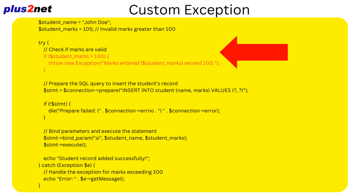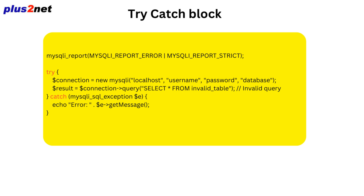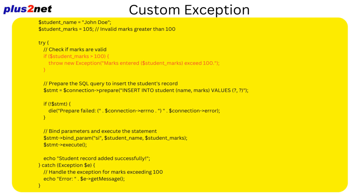Our sources also talked about custom validation — using the example of validating student marks and making sure nobody accidentally enters a grade higher than 100. A little forethought can save a lot of trouble down the line, because tracking down a rogue grade in a database full of student records is not exactly a walk in the park. Custom validation is like having an extra set of eyes double-checking everything before it gets close to the database — catching that illogical data right at the source.